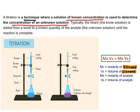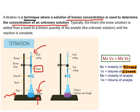Let us understand this. The solution of known concentration is known as the titrant — that means you know the concentration of that particular titrant. The reason why titration is carried out is to know the concentration of the analyte. The solution whose concentration is to be determined is known as the analyte. Analyte is taken in the conical flask, and the solution whose concentration we already know is taken in the burette. The titrant is added from the burette to a known quantity of analyte. Analyte means the unknown solution.